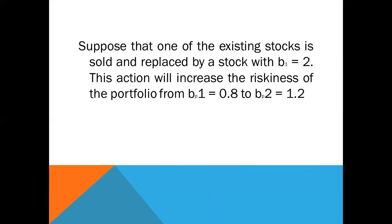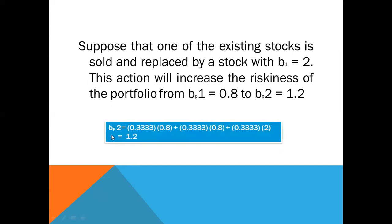Suppose one of the existing stocks is sold and replaced by a stock with a beta of 2. This action will increase the riskiness of the portfolio from 0.8 to 1.2. The new portfolio beta is: 0.333 × 0.8 + 0.333 × 0.8 + 0.333 × 2.